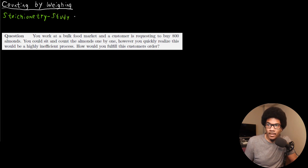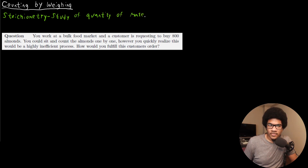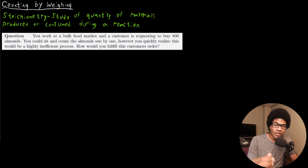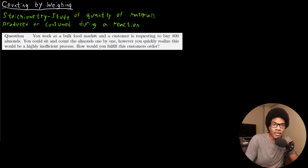So stoichiometry is the study of materials, specifically the quantity of materials produced or consumed during a reaction. We want to be able to study a chemical reaction and know: if we start with a certain amount of a particular substance and it's going to produce a certain product, can we track how much will be consumed of that compound throughout that chemical transformation? That's the study of stoichiometry.